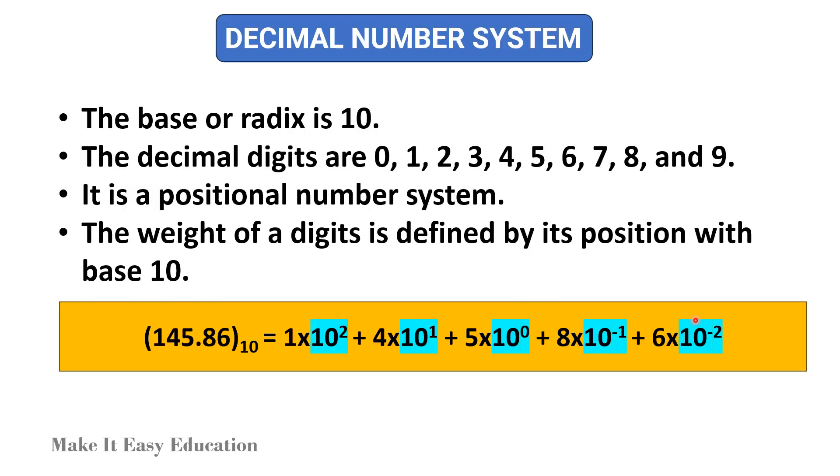Decimal number system. The base or radix is 10. The decimal digits are 0 to 9. It is a positional number system. The weight of a digit is defined by its position with base 10. In this example, the value of a given decimal number can be expressed as a sum of various digits multiplied by their place values, or weights.